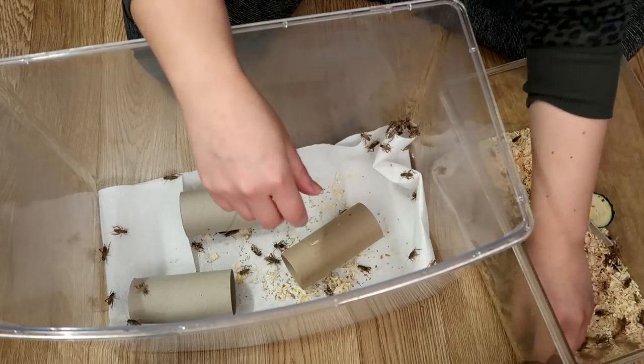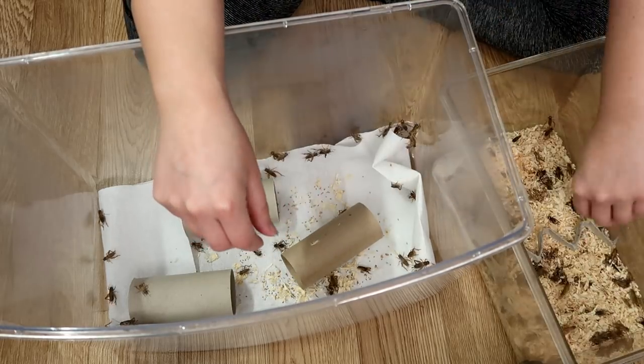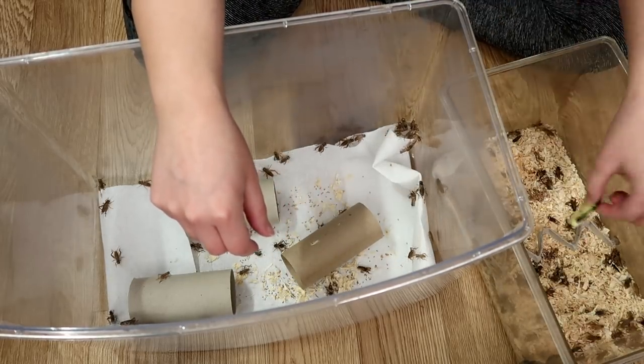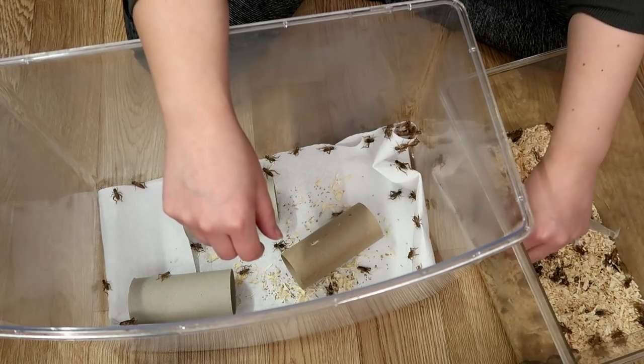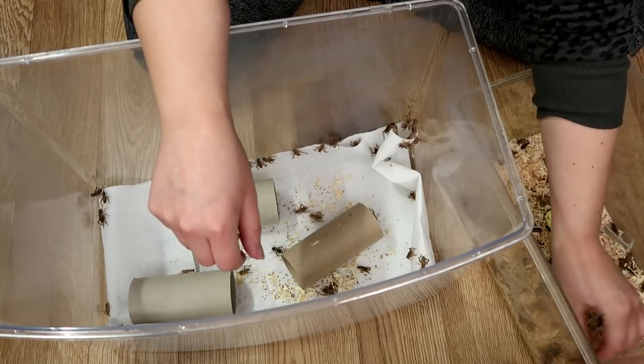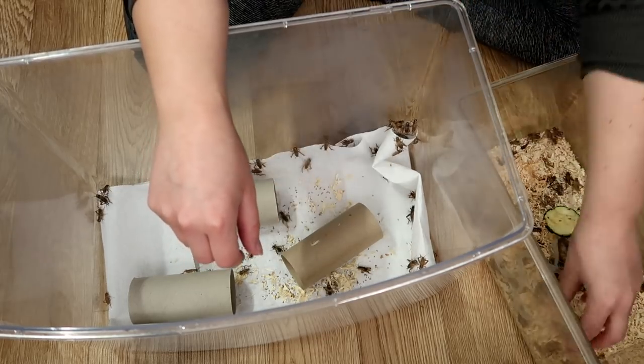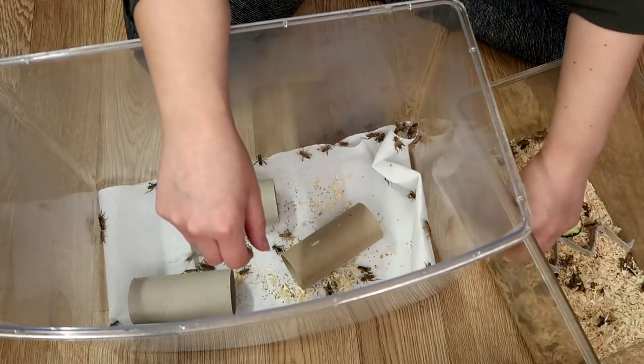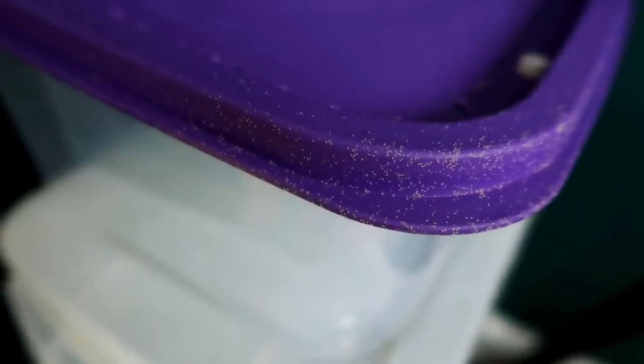One thing I will say is if you do keep your feeder insects in a cooler area or in the fridge, warm them up before you give them to your geckos. So either warm them up in your hand or whatever you intend on feeding your geckos, place them in a tub, bring them into the warmth. Because you don't want your gecko being one temperature and the food being so much cooler. It wouldn't be natural for them.